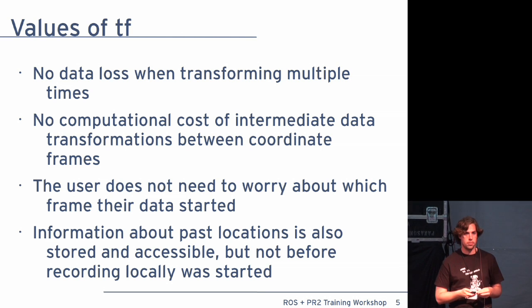And the other thing that's important about this is that when you are operating with data in a distributed system, not all information is available now. It may be a couple milliseconds old, it may be a couple seconds old. And TF keeps track of that data history for you in time, so you don't have to worry about what time exactly the data came in. The data also has a timestamp. So between the timestamp and the frame ID, you know exactly where that data came from.